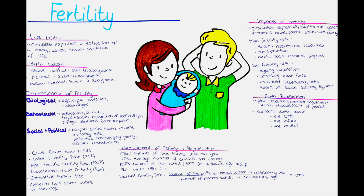Comparing fertility and reproduction patterns across countries provides valuable insights into global variations and trends. Historically, high-fertility countries have experienced a demographic transition with declining fertility rates due to socioeconomic development, improved healthcare, and increased access to family planning services. However, variations in fertility rates still exist between regions, with sub-Saharan Africa having the highest fertility rates and several countries experiencing below-replacement fertility. The global total fertility rate is projected to decline to 2.4 children per woman by 2030 and 2.2 children per woman by 2050.